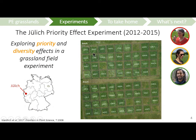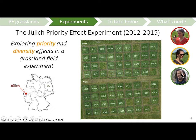In order to explore how priority effects and diversity affect plant community structure and ecosystem functioning in grasslands, we set up a field experiment in Jülich from 2012 to 2015. This experiment was mainly set up by Vicky Temperance, Emanuela Weidlich, and Philipp von Gelausen, who used to work in Jülich at IBG2.